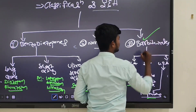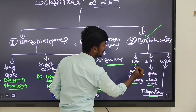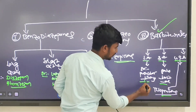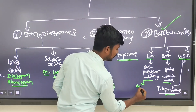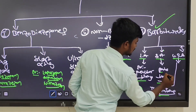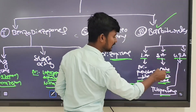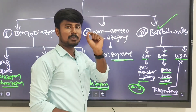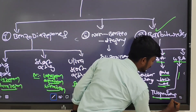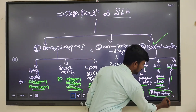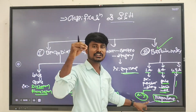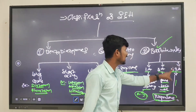Then barbiturates - a very important drug class. Long-acting, short-acting, and ultra-short-acting. In long-acting: phenobarbitone, which is used for neonatal jaundice. Then short-acting: pentobarbitone, also known as butobarbitone. Ultra-short-acting: thiopentone sodium, which is used in the operation theatre for inducing anesthesia - it acts as anesthesia.